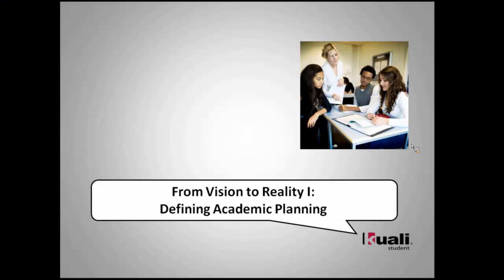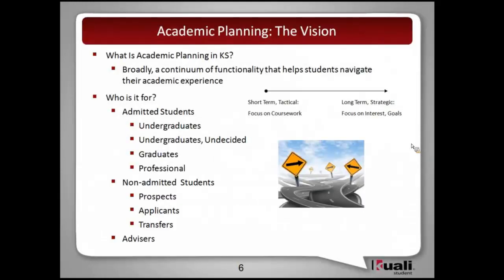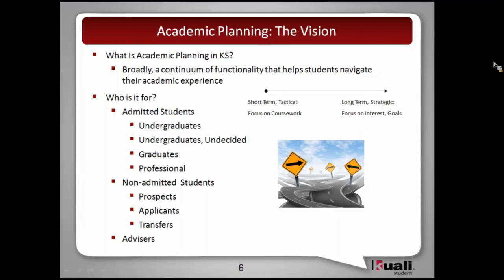So what is academic planning? Very broadly, it's a continuum of functionality that helps students navigate their academic experience. We call it a continuum because we can think about things in the very short term and very tactical — meaning what courses I should take, what specific things do I need to do next quarter — but it can go all the way to the long term and the more strategic, where we're really focused on the student's interests and academic and personal goals.